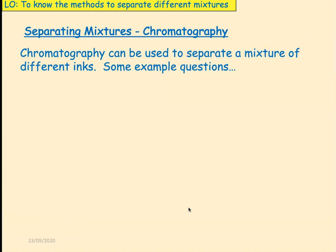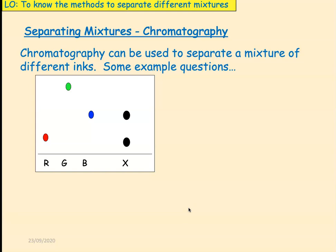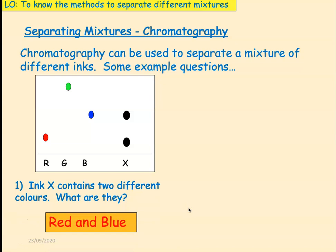Chromatography can be used to separate a mixture of different inks. So, here's some example questions. We've got three dots produced by three different colors. They are red, green, and blue. Now, if that ink, ink X, gave that particular pattern, can you see that it matches with the same height that red has traveled, and the same height that blue has traveled? So, if we want to identify what ink X is, it will be a mixture of red and blue.